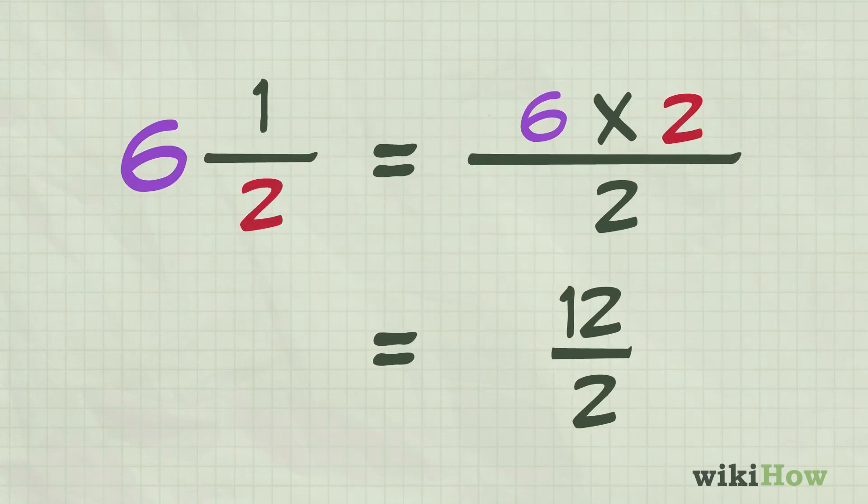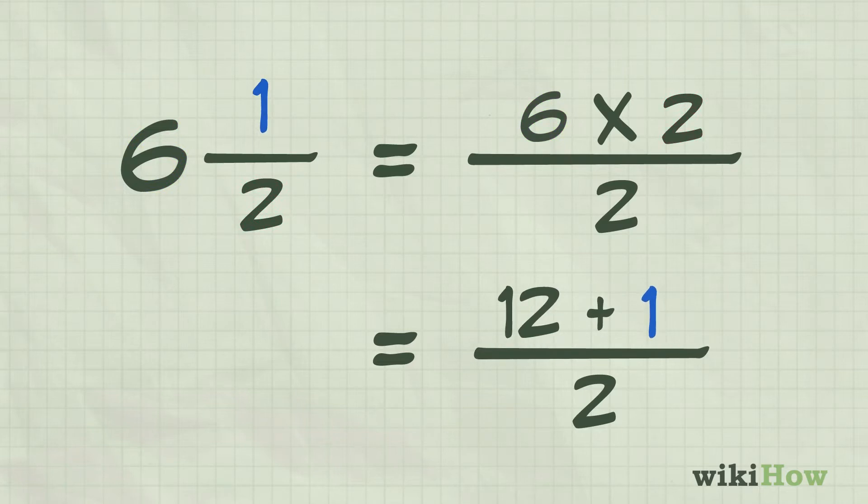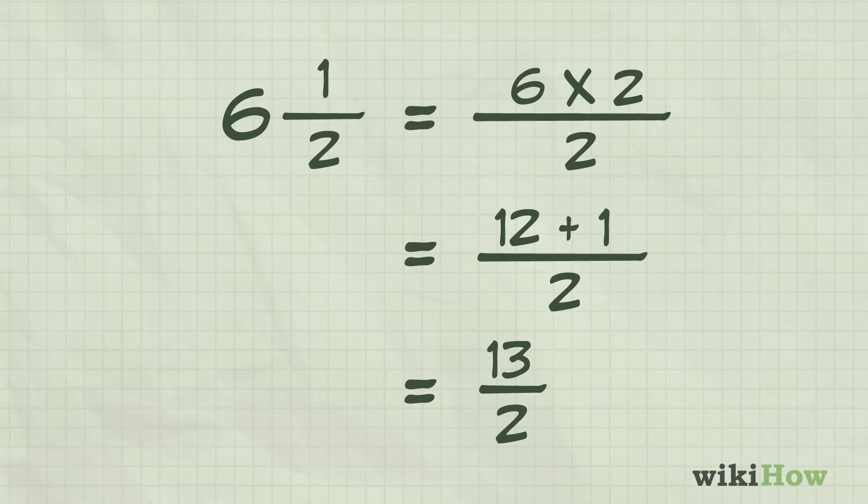Then add the product to the numerator. In this example, 12 plus 1 equals 13. This will become the new numerator of your fraction, giving you the improper fraction of 13 over 2.